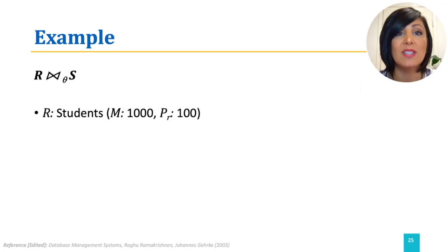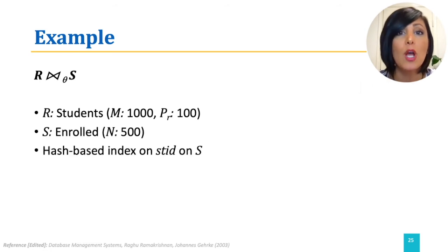Say we choose R to be our students table with 1000 pages and 100 tuples per page, and S to be our enrolled table with 500 pages. In addition, assume we have a hash based index on STID for S.